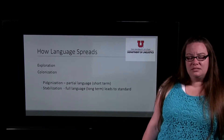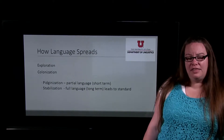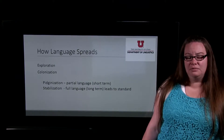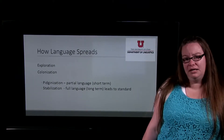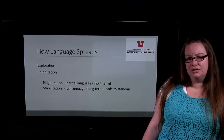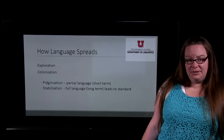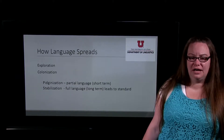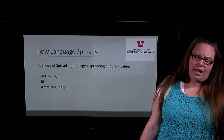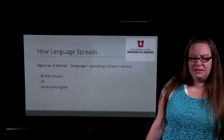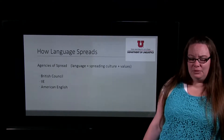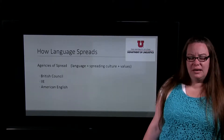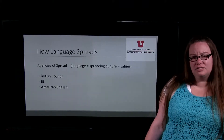Then we have the process of stabilization, where that pidgin has existed for a long time and starts to become a language that people use over and over again — even children start to learn it. Once the language becomes stabilized, it leads to some sort of standardization, often favoring one standard over another. After those factors have happened, we see what we would call agencies of spread — organizations that also help to spread certain dialects across the globe.